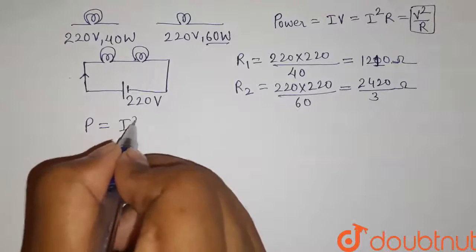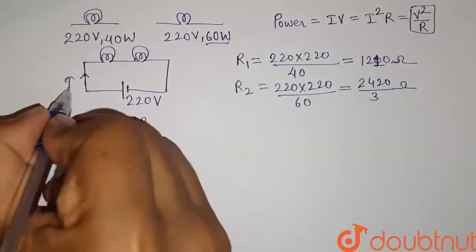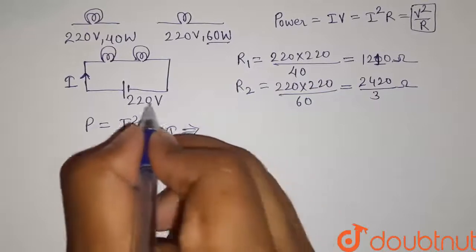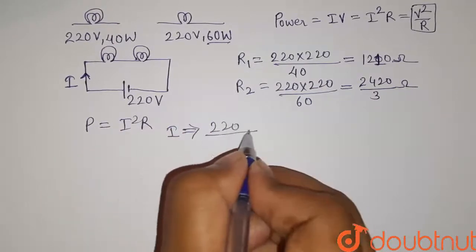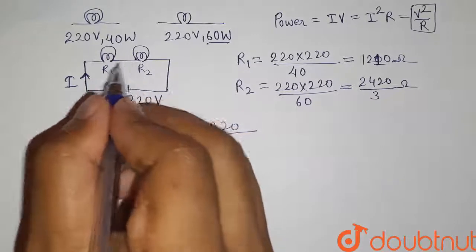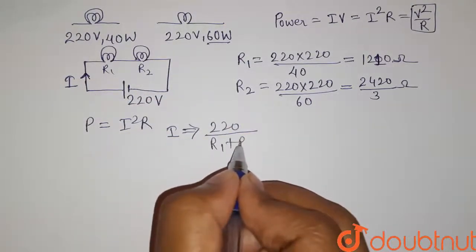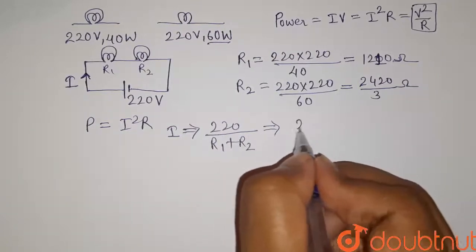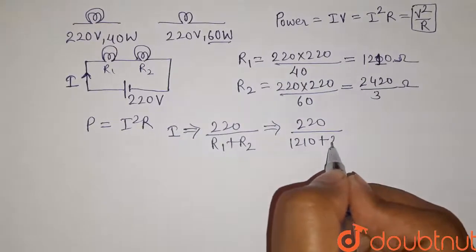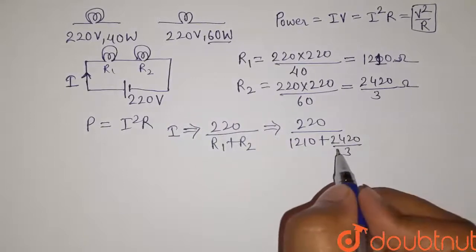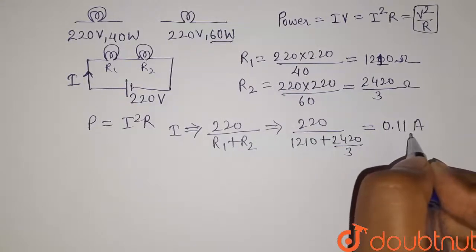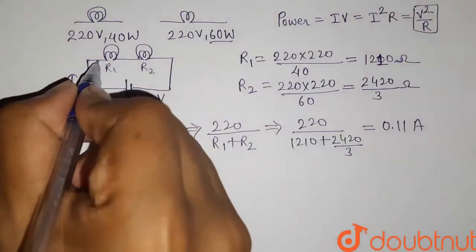We need to find the value of current I for this circuit. I = total voltage / total resistance = 220 / (R1 + R2) = 220 / (1210 + 2420/3). Solving this, the value of current is 0.11 ampere, which flows through both lamps.